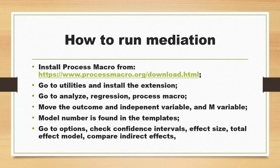For mediation, we first need to install the Process macro. You can download it from a website — I will leave the link in the description box below. Once you download the Process macro, go to Utilities in SPSS and install the extension. Locate it, install it, and when installation is complete, go to Analyze > Regression, where you will find a new button called Process macro.